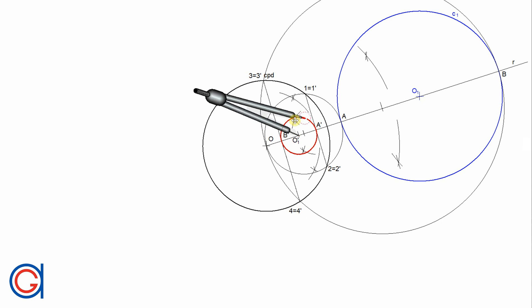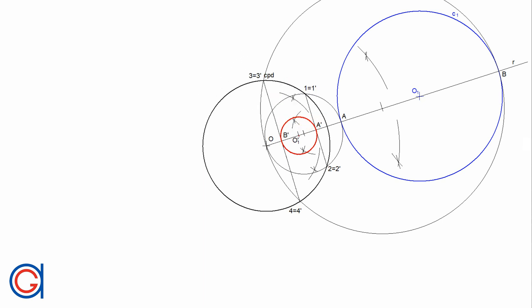We show C1 prime here in a thicker red line. As you can see in green, the tangent lines of C1 and C1 prime converge on the origin O of the reference circle. This is a property of inverse circles which many teachers use to check if they have been drawn precisely.